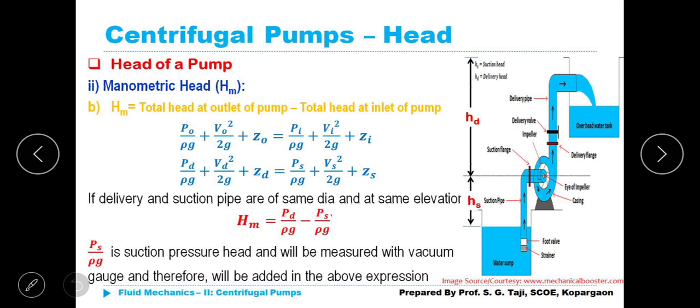Therefore HM is equal to total head at outlet of pump minus total head at inlet of pump. PO, O refers to suffix outlet, I refers to inlet. All other parameters you are aware. PO by rho G plus VO squared by 2G plus Z naught minus PI by rho G plus VI squared by 2G plus Z I. What are these? Static head. VI squared by 2G or VO squared by 2G represents velocity head. Whereas PI upon rho G or PO upon rho G represents which type of head? Pressure head. Very correct.